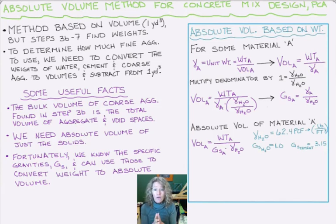So now we can take this generic volume equation for any material, and we can use it to find the absolute volume of our cement, of our water, and of our coarse aggregates.